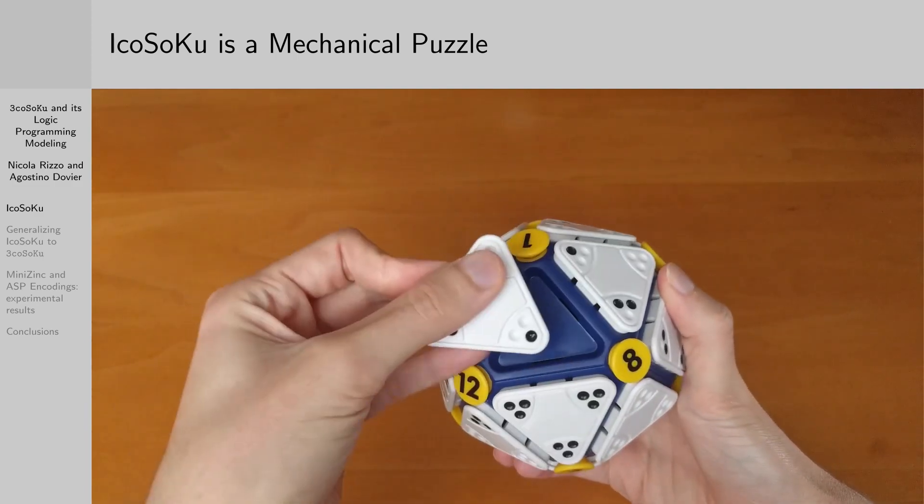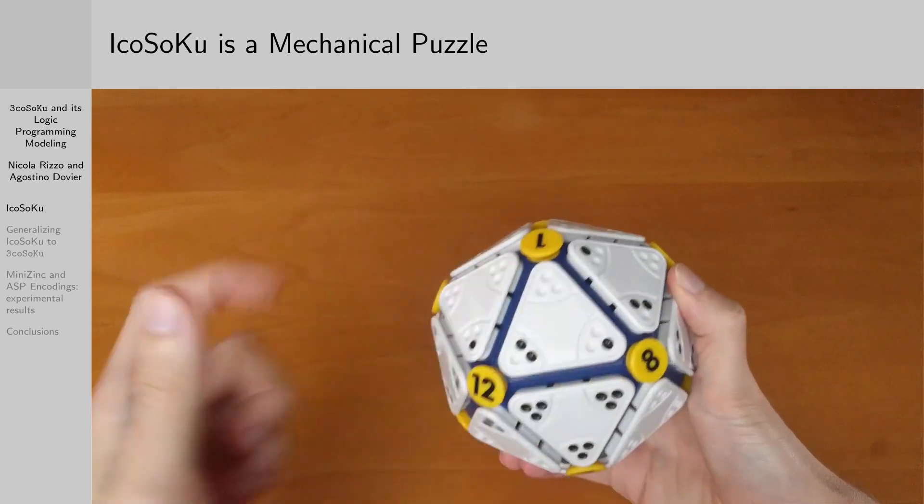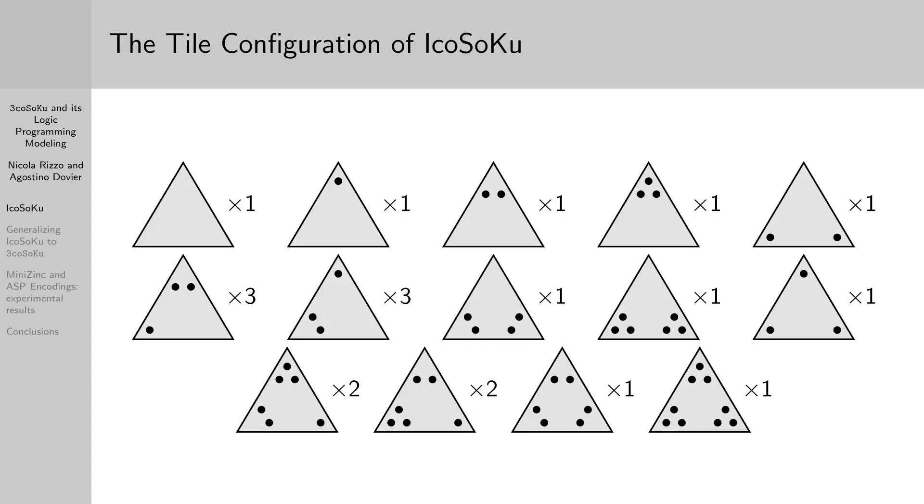It is claimed by the game's maker that every initial configuration of the yellow pegs can be solved. These are the 20 tiles that ship with the game and that must be rotated and placed on the faces of the icosahedron. As you can see, some tiles are repeated, some tiles have three different numbers of black dots, whereas others might have two or three vertices with the same number of black dots.